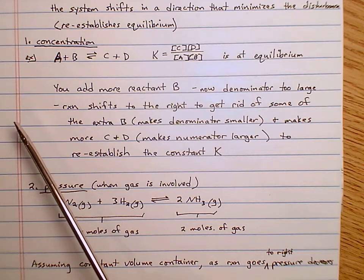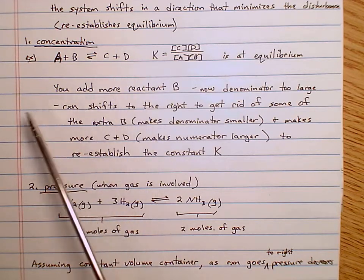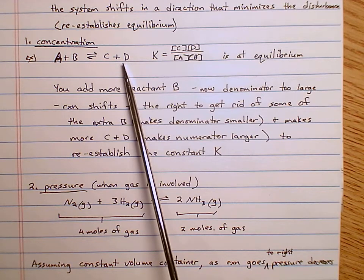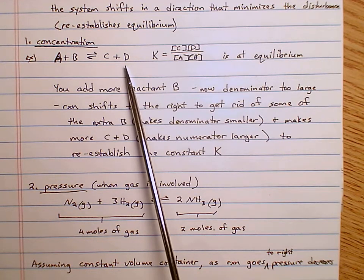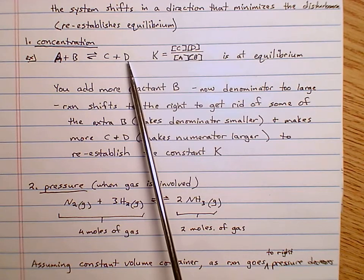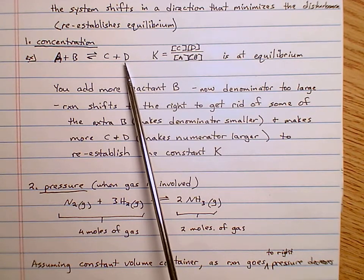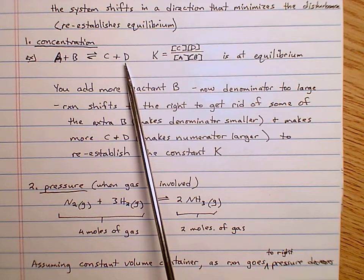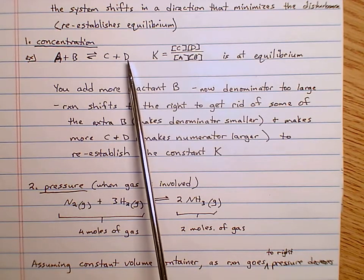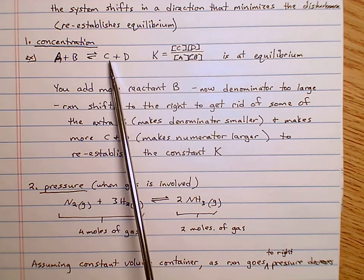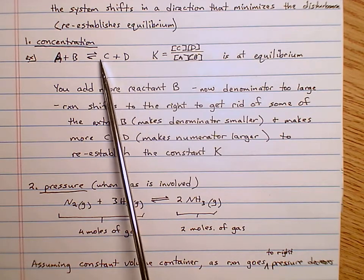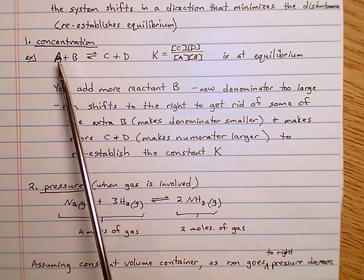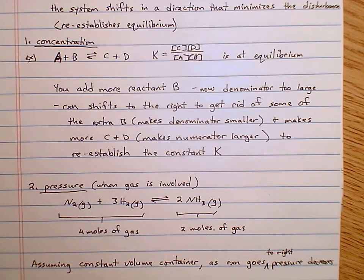What happens if you're running your reaction at equilibrium and a bunch of product D gets thrown in — maybe your lab partner dumps a whole bunch of D in there? If you add a bunch of product to your reaction that's at equilibrium, there's too much D — that's the stress. The equilibrium will shift to the left, getting rid of C and that extra D, and reestablish the equilibrium constant.